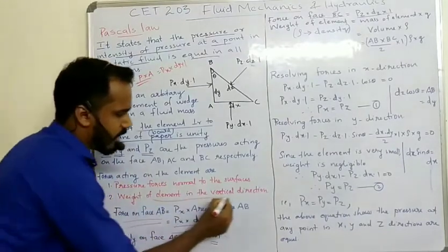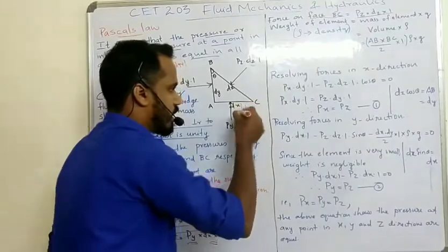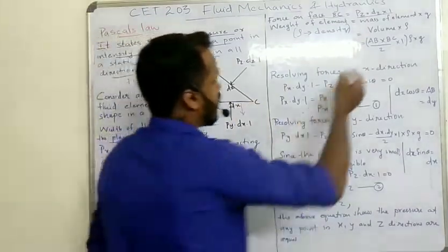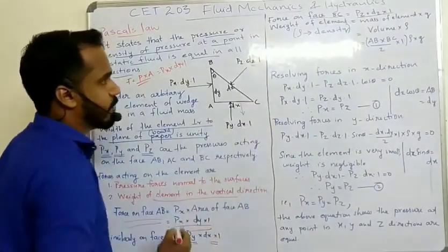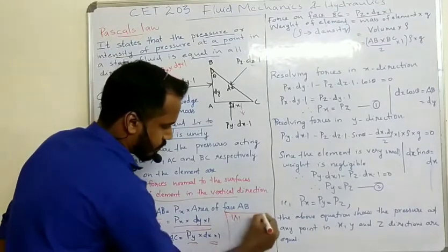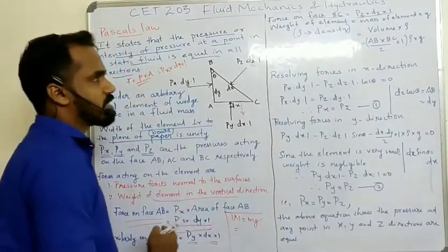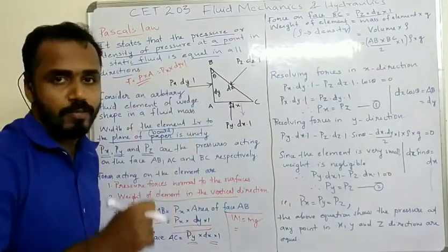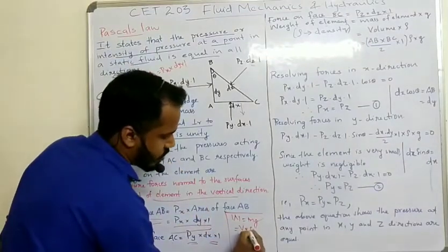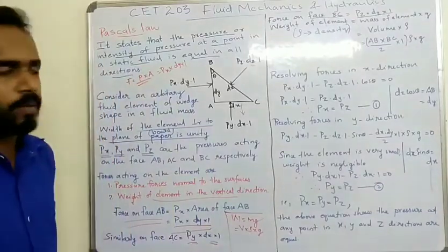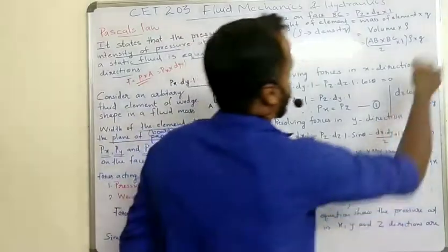The weight of the element acts vertically downwards. Weight W is equal to mg. Mass is equal to volume times density, so W equals volume times density times g — that is, rho into g.